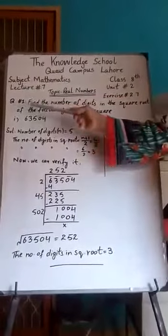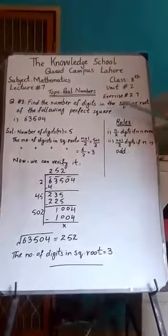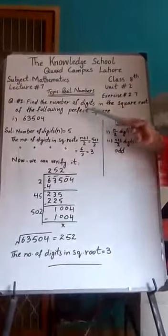Question number 1 is that students find the number of digits in the square root of the following perfect square.